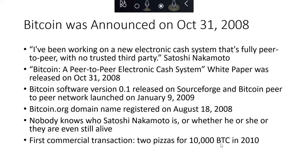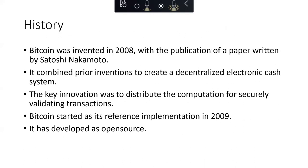In those days, a Bitcoin was worth less than a penny, whereas now you're talking $30,000 to $60,000 for a Bitcoin, depending on what time this year you're talking.